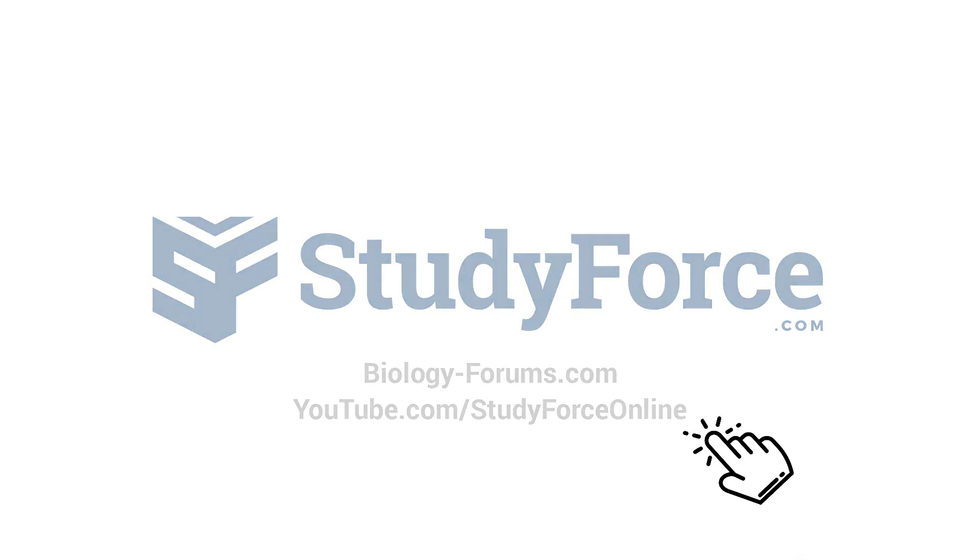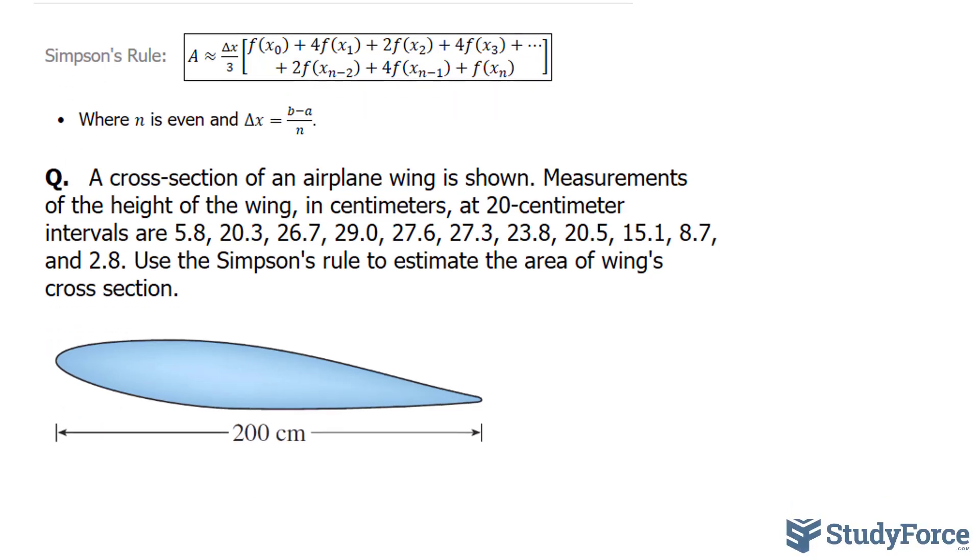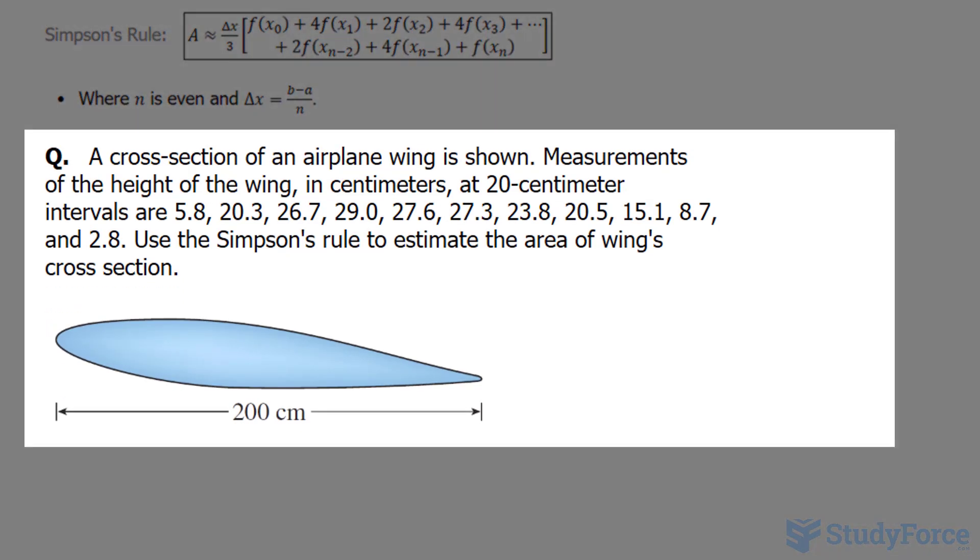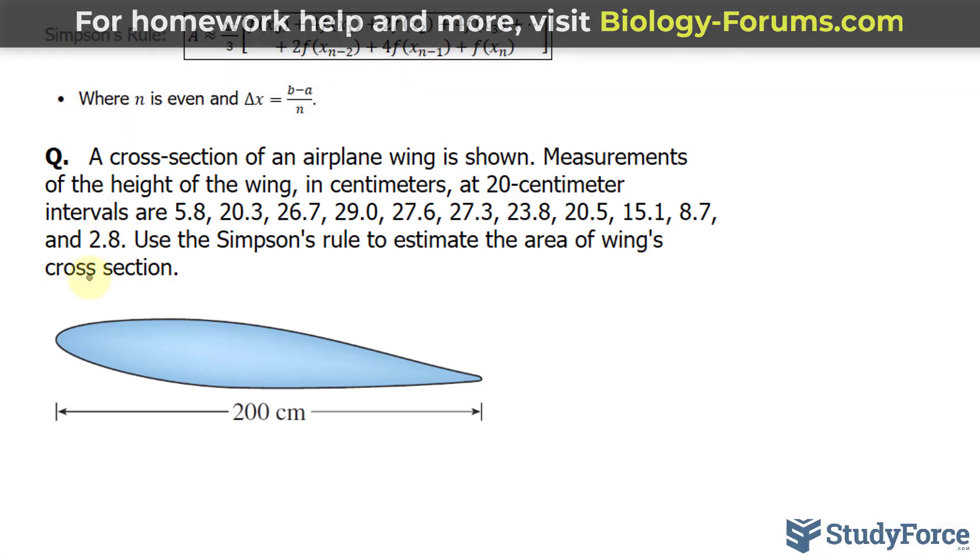In this lesson, I'll show you how to approximate the area of a shape using Simpson's rule. The question reads: A cross-section of an airplane wing is shown. Measurements of the height of the wing in centimeters at 20 centimeter intervals are found to be the numbers shown here. Use Simpson's rule to estimate the area of the wing's cross-section.